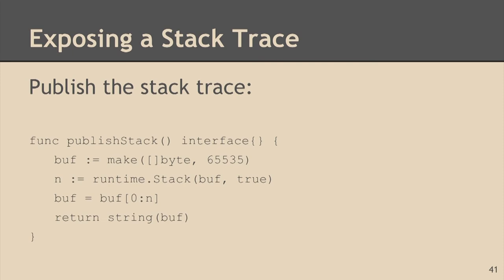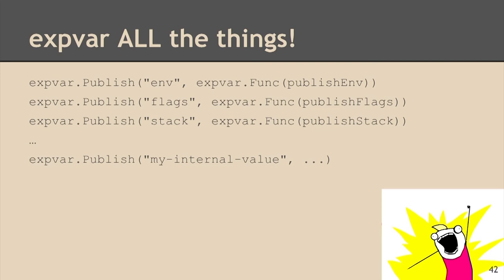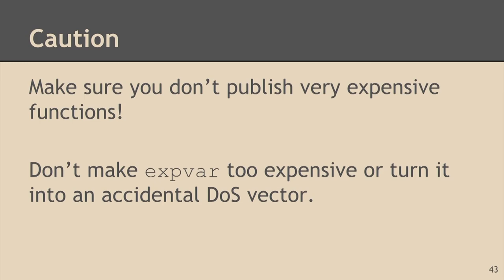The first three things — environment, flags, and stack trace — I would expose in every program. At Oscar, everything that runs exposes these things, everything, right off the bat. That way when something goes wrong, we can go look at it. You can also publish your own things, and I encourage you to do so — if you have large data structures you want to observe, just publish them. A word of caution though: don't publish things that are super expensive. Don't put a health check that does a full table scan in expvar, because every time it's hit it's going to do that, and you don't want to DOS your service.